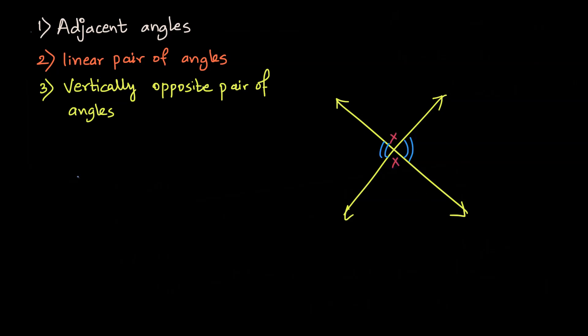So if I name these points, so this is say P, Q, R, S. And if I name the center point as M, so let's just name it M. The blue pair is going to be angle PMR and angle QMR.